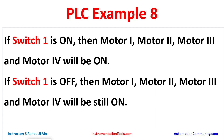Example 8: if switch 1 is on, then motor 1, motor 2, motor 3 and motor 4 will be on. If switch 1 is off, then motor 1, motor 2, motor 3 and motor 4 will still be on. So when the input is true all outputs will be true, and when the input is false the outputs will still remain true. In this case we will use a memory bit and latch it, then use that memory bit to turn on the motors.